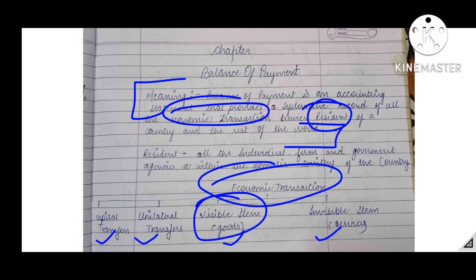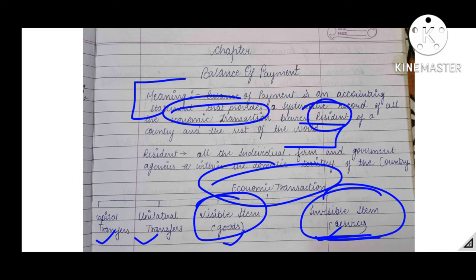Intangible goods are termed as services. So services exchanged from one nation to another — or one person to another economically — are called economical transactions in the invisible form. Services are the second subpart of our economical transaction.